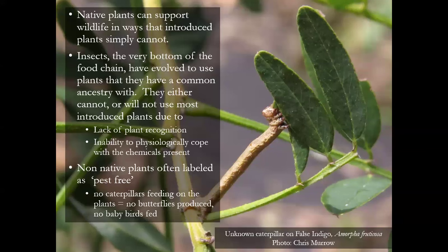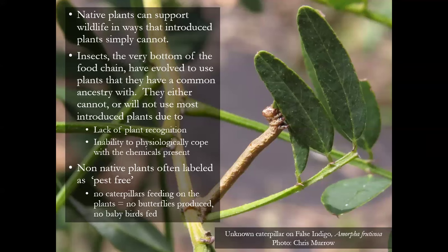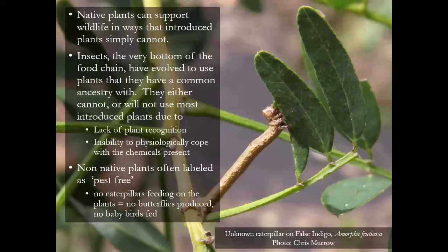Why do we care about native plants and native insects? Insects are at the very bottom of the food chain. They take the energy captured by plants and turn it into food and complex proteins eaten by birds, mammals, and other creatures. Native plants can support native insects in ways that non-native plants simply cannot. Gone should be the days where we go to the garden center and look for non-native plants labeled as pest-free. Pest-free means no one's eating them — no one like this unknown caterpillar on false indigo.